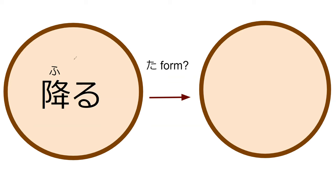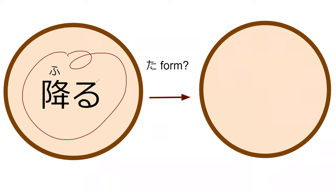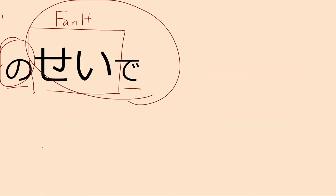What do you think the ta-form of furu is? It's an u-verb, so it's futta — perfect, with that little small tsu. Our next word is sei. I've decided to keep no sei de and no sei because you're never really going to see sei by itself — it'll be something no sei or no sei de. Sei means fault, so no sei de means it's the fault of blank. For example, watashi no sei de means it's my fault.